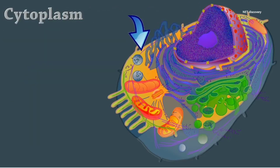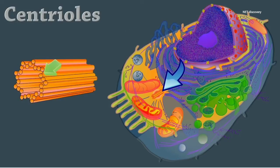In addition to organelles, the cytoplasm also contains other cellular structures. Centrioles are paired cylindrical bodies. Each one is composed of nine triplets of microtubules.